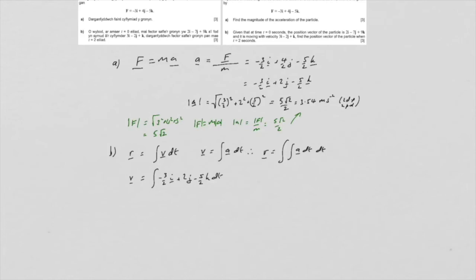And so when we integrate that, we're going to get minus 3 over 2i, plus 2j minus 5 over 2k, all times t, plus a constant. But actually we know what V is when T is equal to 0. So knowing that when T is 0, V is equal to 3i minus 2j plus k, then we have that for V.